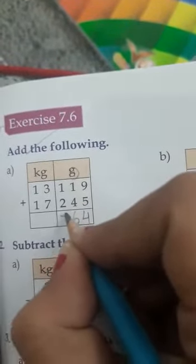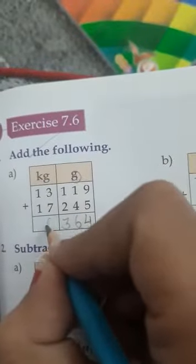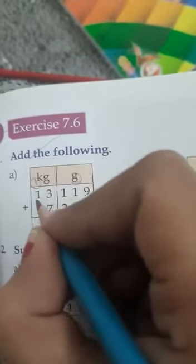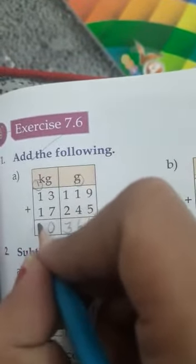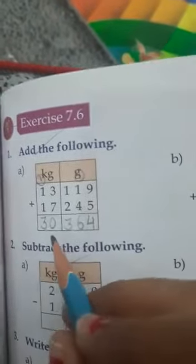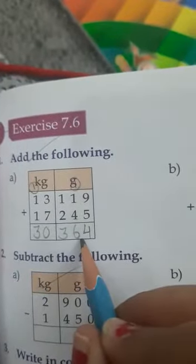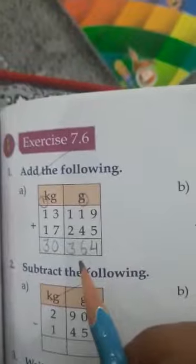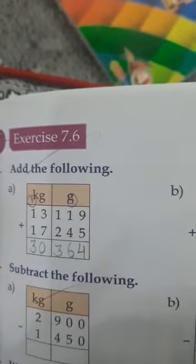1 plus 2 equals 3, 3 plus 7 equals 10, write 0 and carry 1. 1 plus 1 equals 2, 2 plus 1 carry equals 3. So the answer is 30 kilogram 364 gram. Clear students? Other sums, do by yourself.